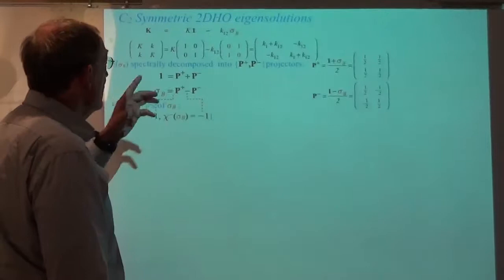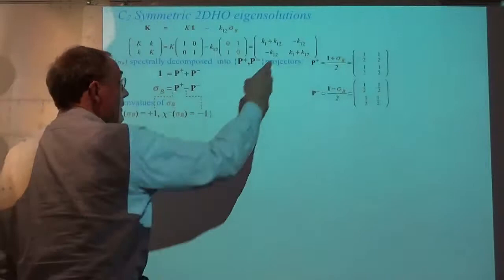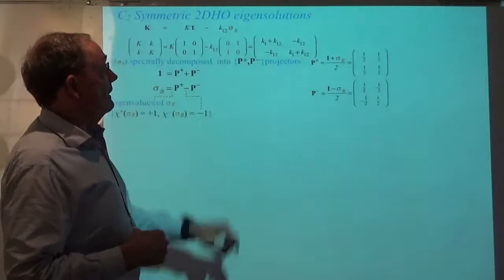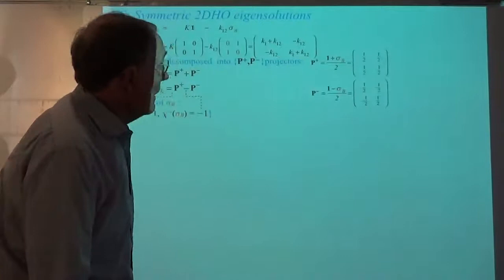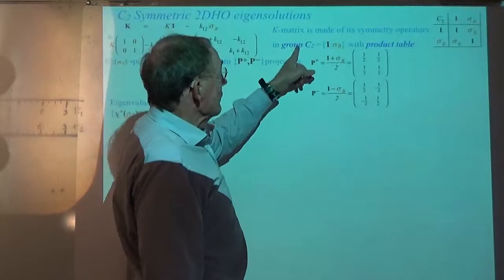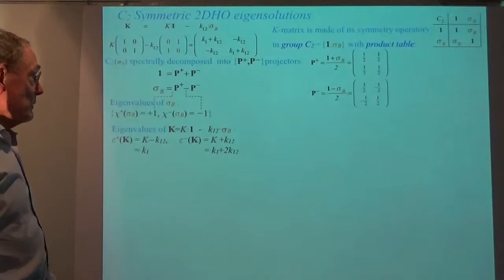Just to review: we've got a matrix we're trying to diagonalize with spring constants — it's a symmetric matrix, symmetric in both directions, which is what makes it bilaterally symmetric. We're writing it as a linear combination of the unit operator and a reflection operator. We've discovered that both of these operators can be written together as a sum of projectors. The idea is the K-matrix is made of symmetry operators; the C2 group with this product table gives us immediately a set of projectors.